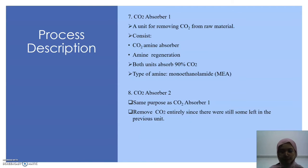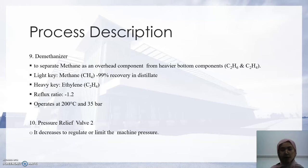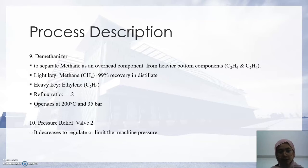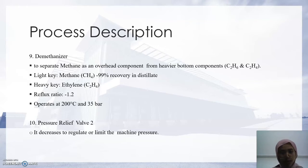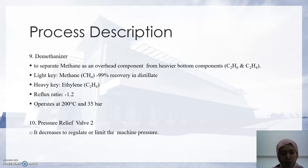Next, we have the demethanizer, which separates methane as an overhead component from heavier components such as ethane and ethylene. The light key is methane with 99% recovery in the distillate, and the heavy key is ethylene. The reflux ratio for this equipment is negative 1.2, and it operates at negative 200 degrees Celsius and 35 bar.